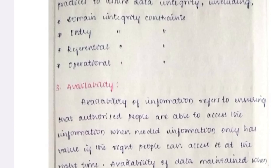Availability of information means measuring whether authorized people are able to access the information or not. Backups are used to ensure availability. From this unit, focus on learning deadlock and its preventions, backup and recovery techniques, and restore procedures.